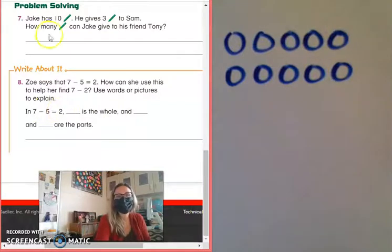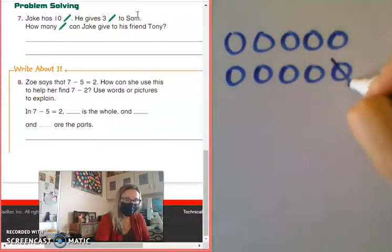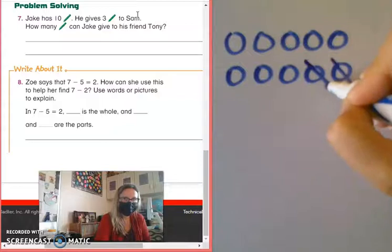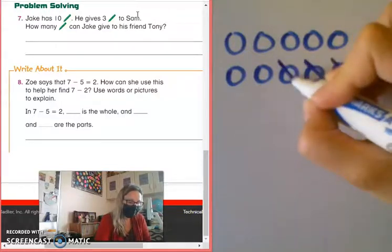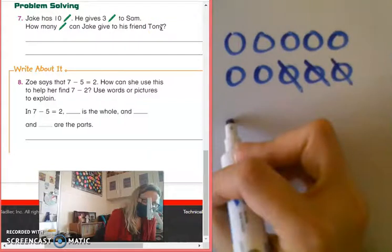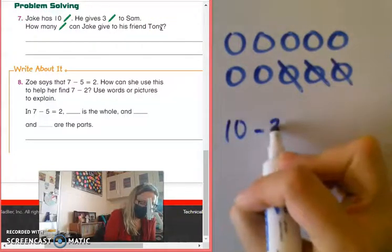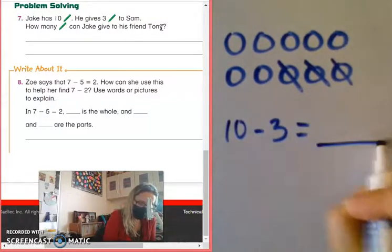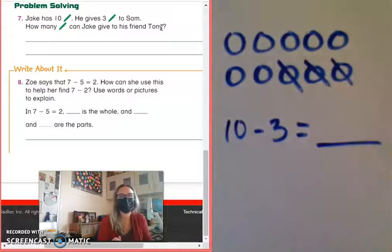He has 10 crayons. It says he gives 3 crayons to Sam. Okay? So here we go. 1 crayon to Sam. 2 crayons to Sam. 3 crayons to Sam. And it says how many crayons can Jake give to Tony? Okay. Well, he had 10 and he already gave 3 away. So how many does he have left to give to Tony?